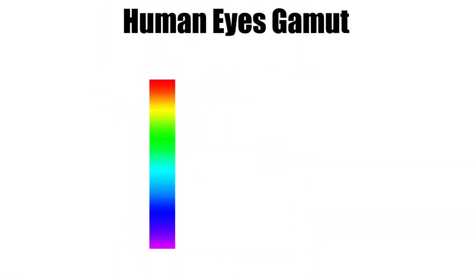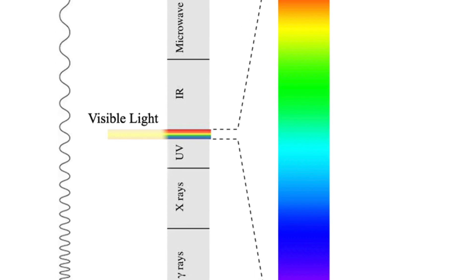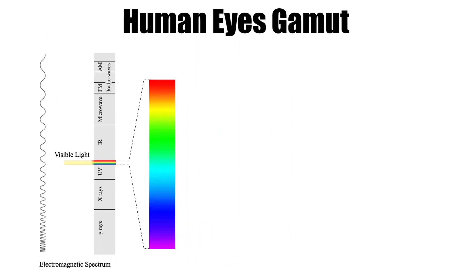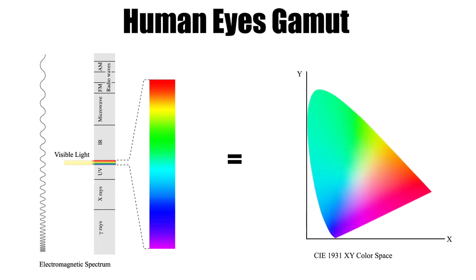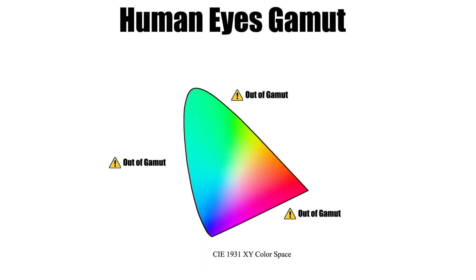The human eye has a certain gamut, which is a tiny section of the electromagnetic spectrum called visible light. The visible light spectrum, when expanded on a two-dimensional graph, looks like this chromaticity diagram called CIE 1931 XY, which is one of the earliest color spaces created way back in 1931. The horseshoe-shaped diagram shows us the range of colors visible to humans, and anything outside this color space is not visible to us and is considered out of gamut for the human eye.